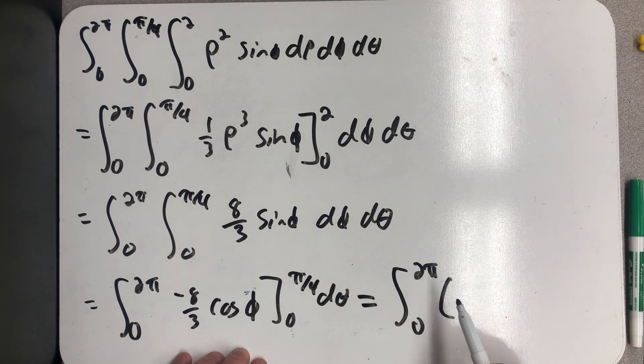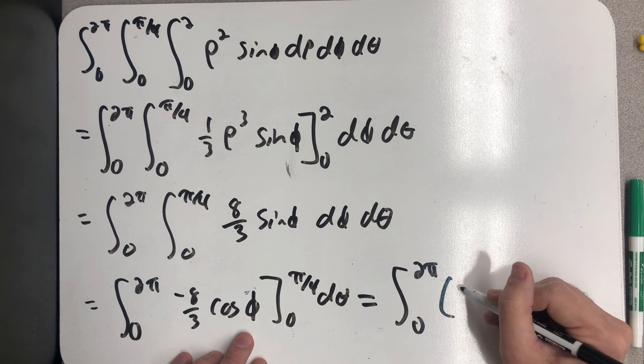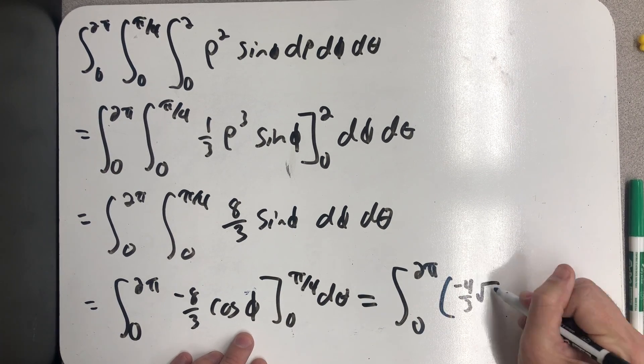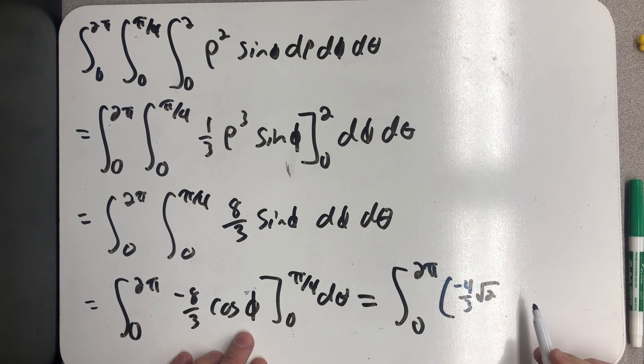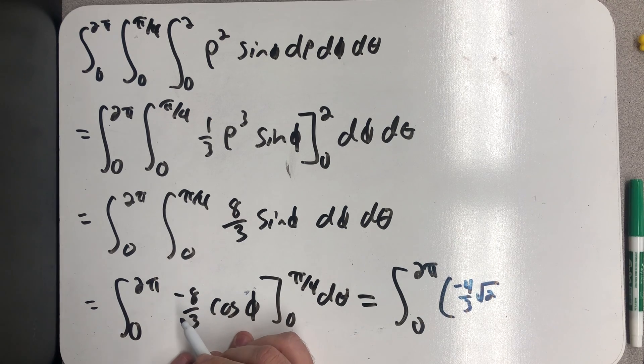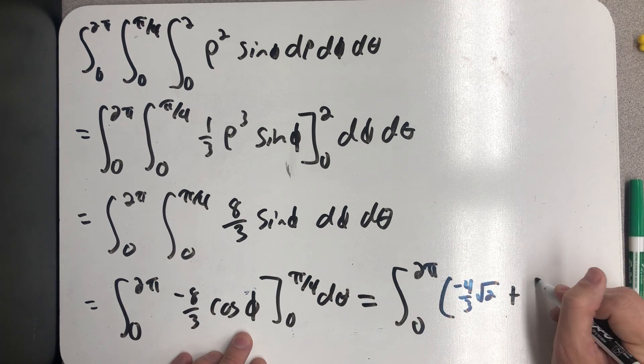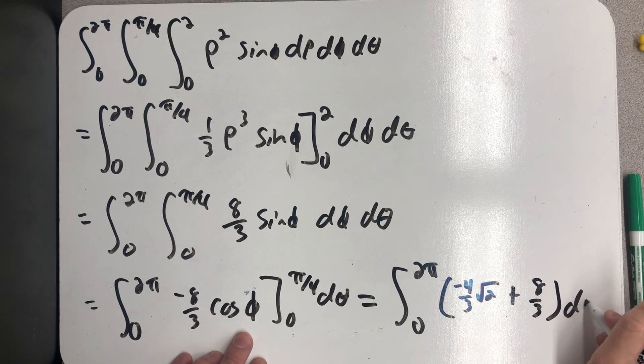Alright, so doing that evaluation, I plug in pi fourths and I get root 2 over 2, so that would simplify to minus 4 thirds root 2. Plugging in zero, I would get minus 1, excuse me, I get minus 8 thirds, but it would be a minus, so I get a plus 8 thirds d theta.